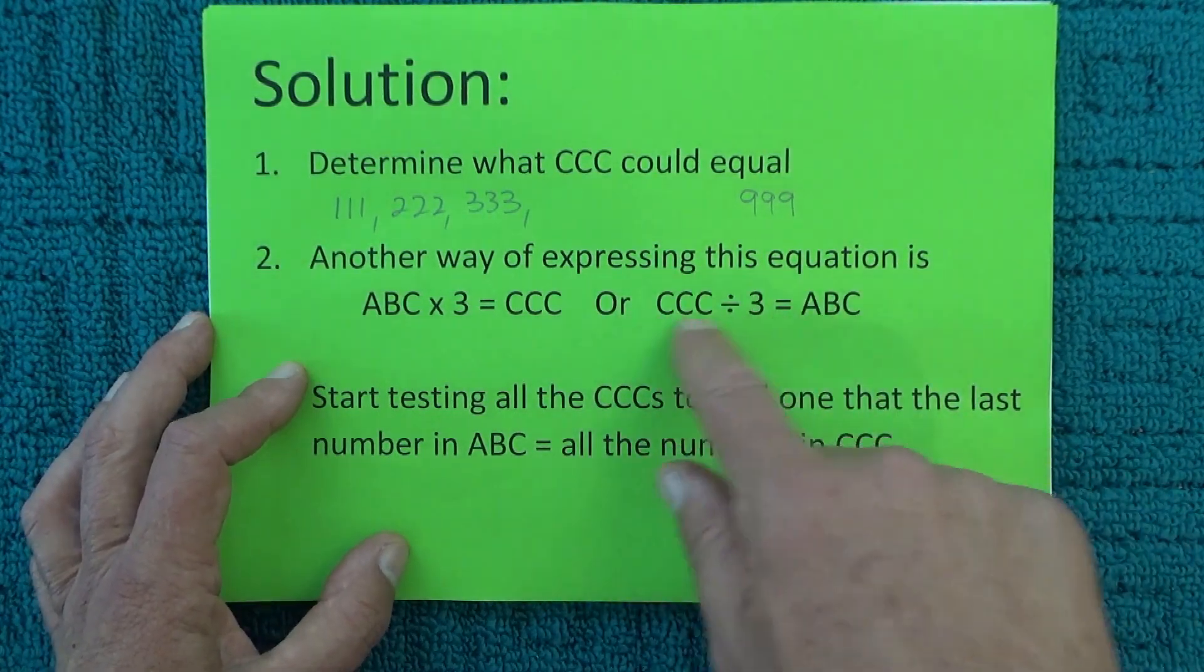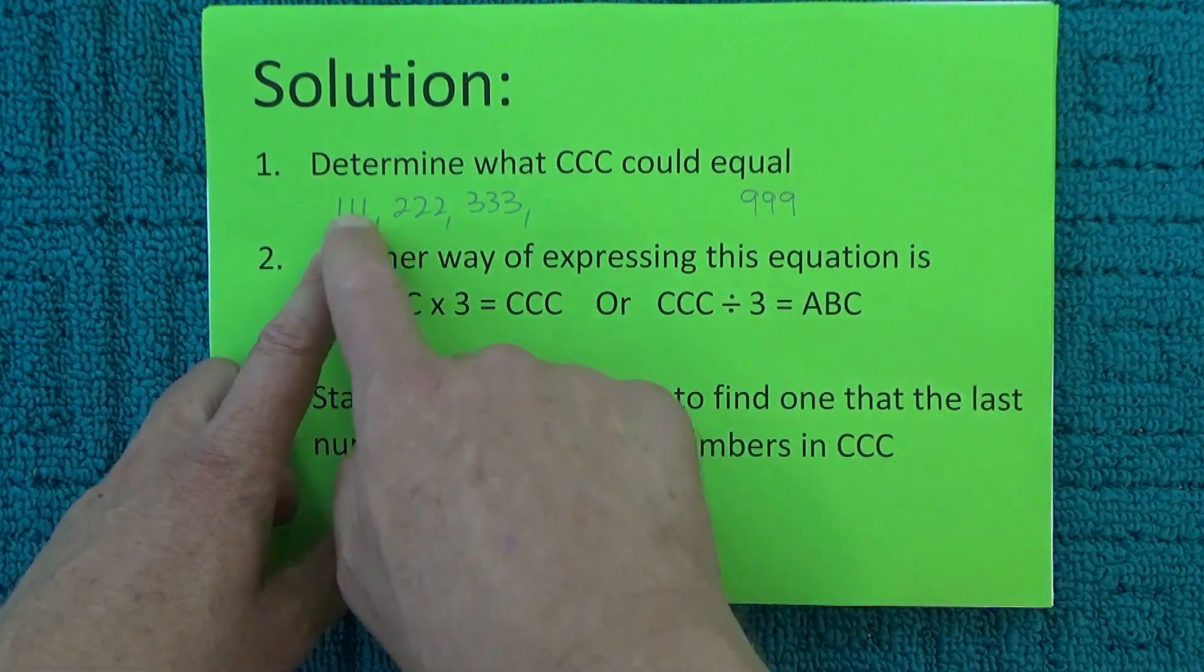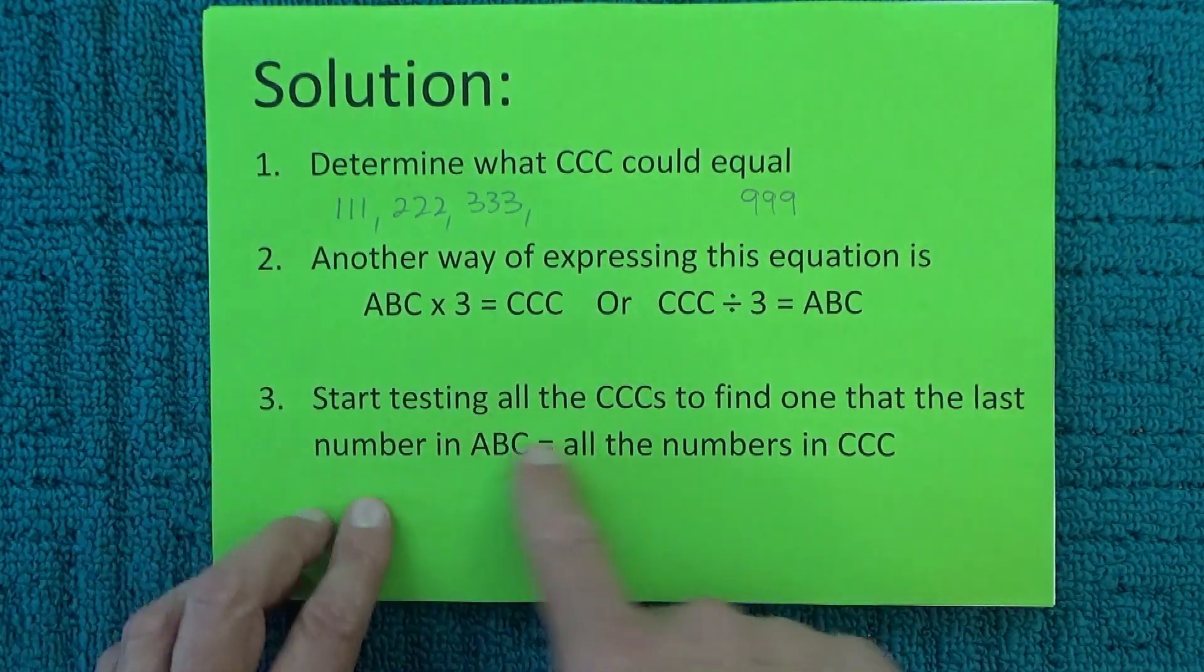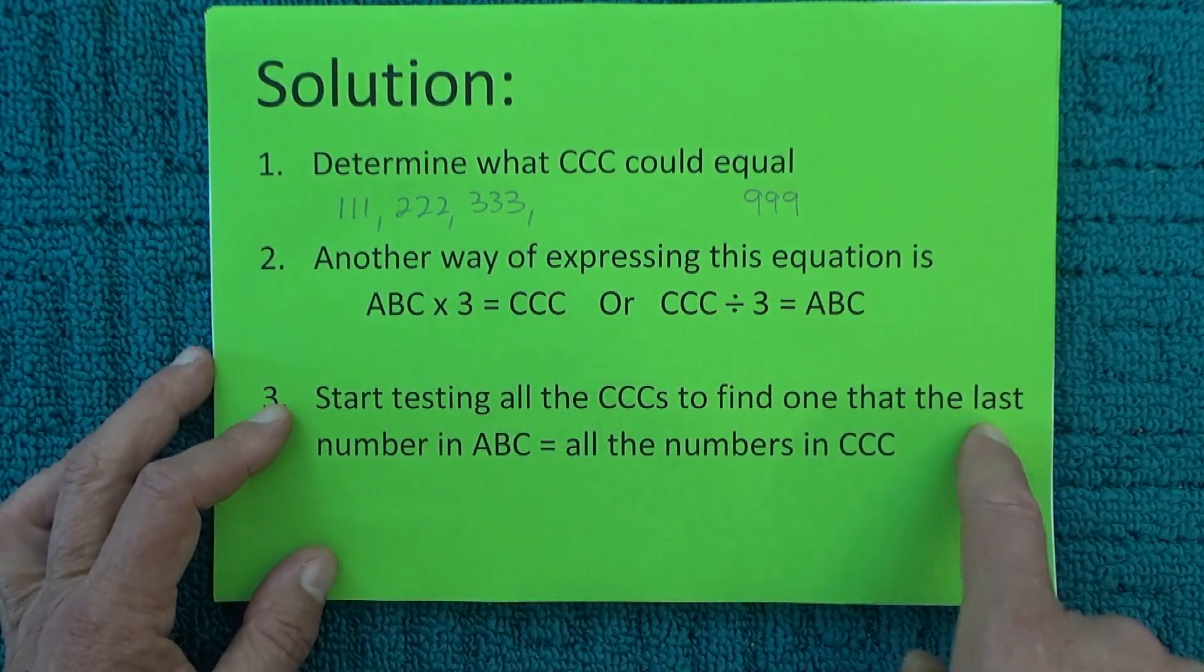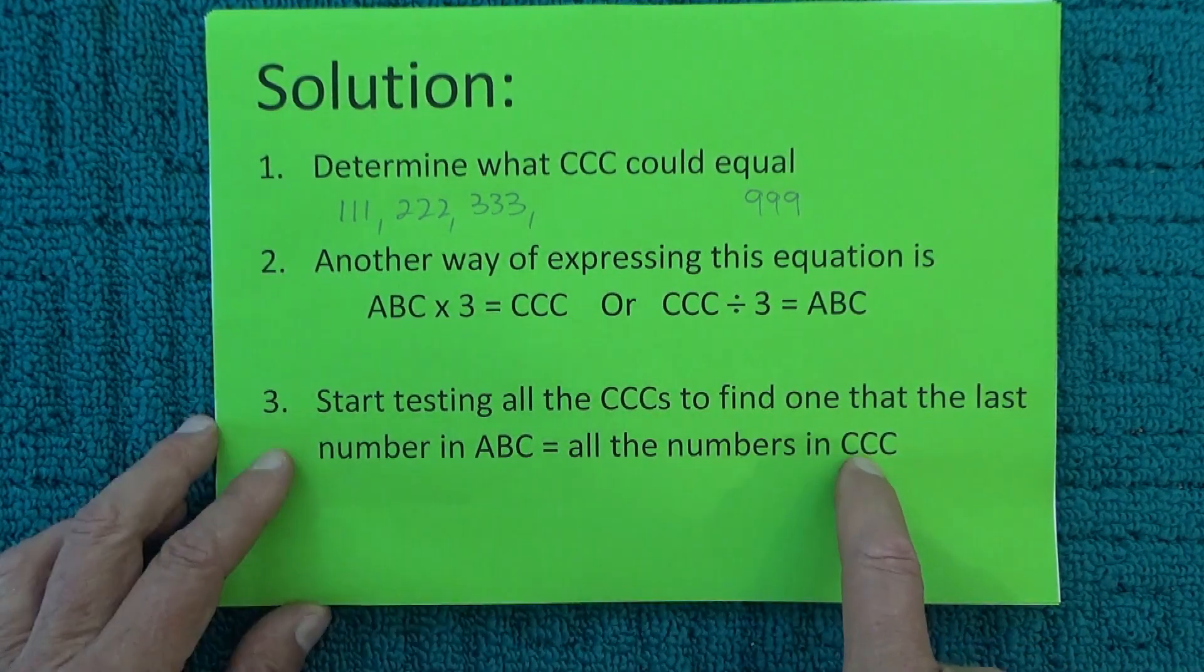Once we understand it can be represented by that equation, all we need to do is start testing the numbers that CCC could be. We'll test all the CCCs to find one where the last number in ABC equals all the numbers in CCC.